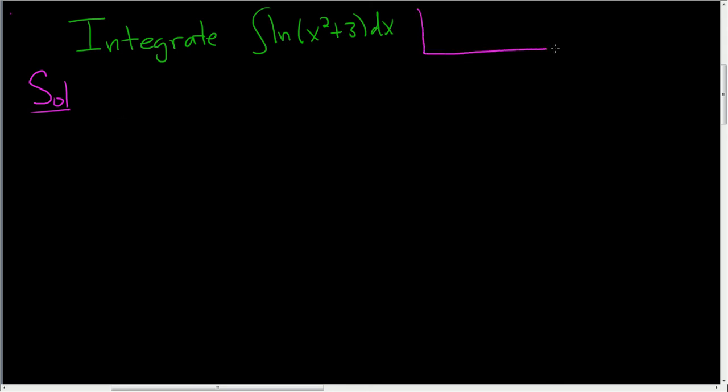So recall, the formula for integration by parts says if you have the integral of u dv, that's equal to uv minus the integral of v du.